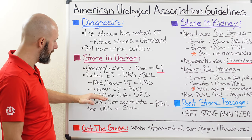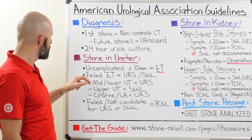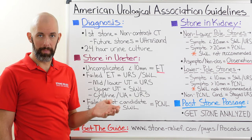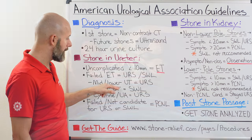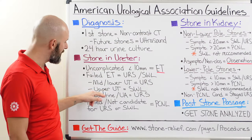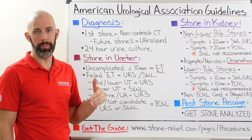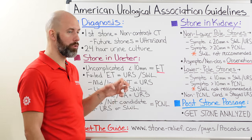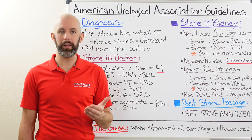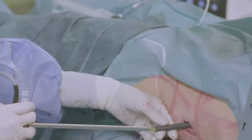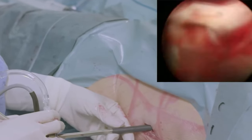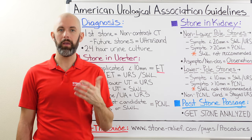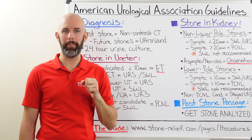They further classify based on location and stone type. For stones in the mid or lower urinary tract, ureteroscopy is recommended. For stones in the upper urinary tract, shockwave lithotripsy is recommended. For cysteine or uric acid stones, ureteroscopy is the first-line option. If ureteroscopy or shockwave lithotripsy fails, the next option they recommend is percutaneous nephrolithotomy, which is a moderately invasive technique for treating kidney stones that has been around for a very long time.